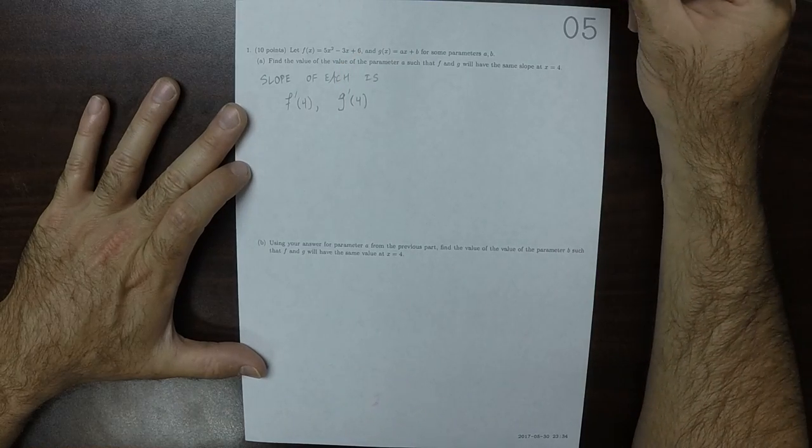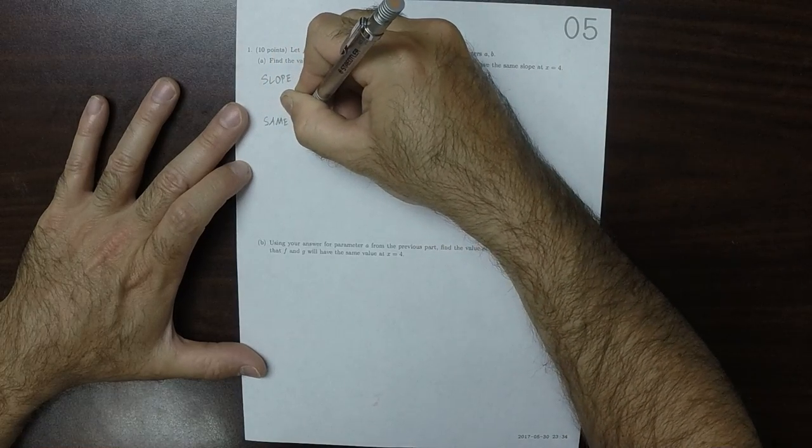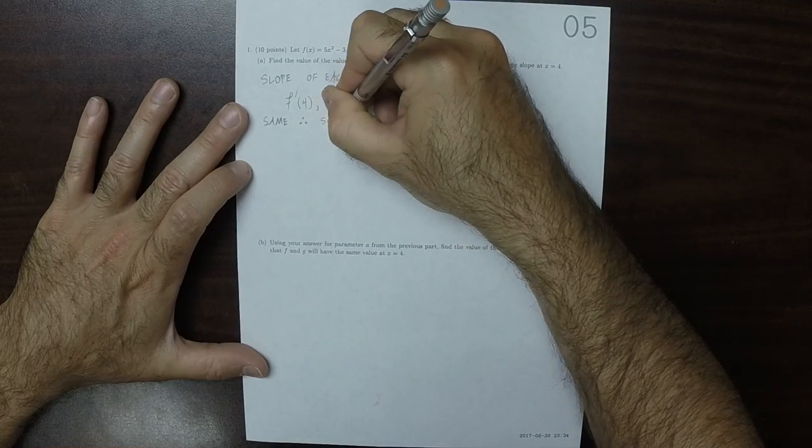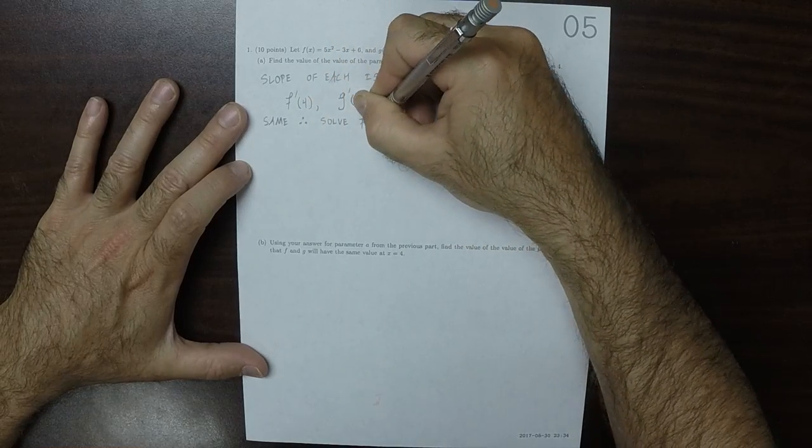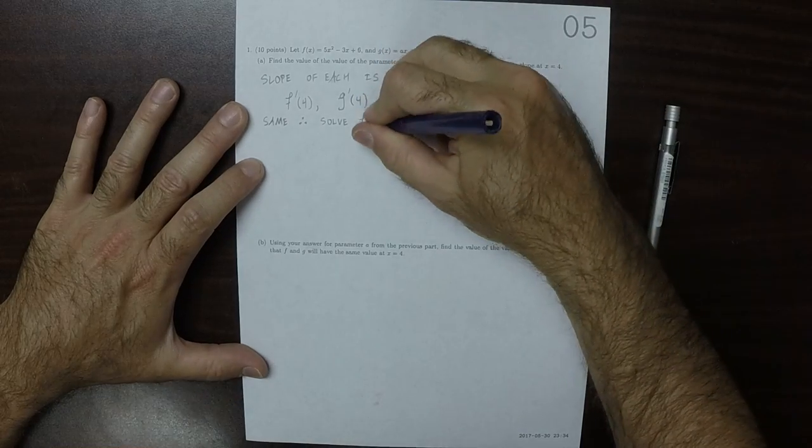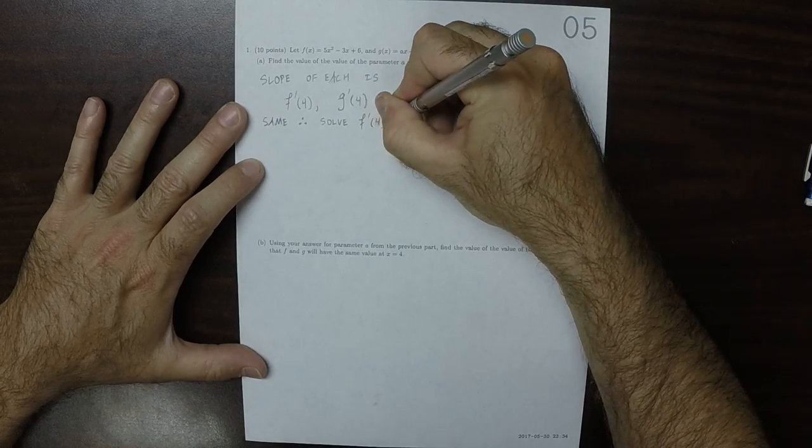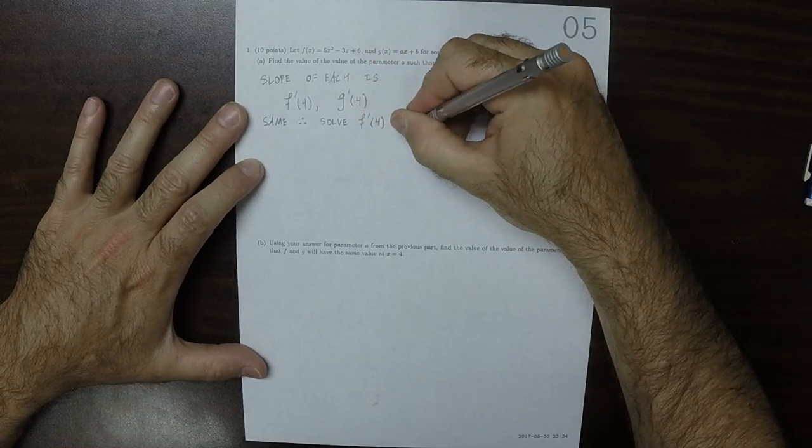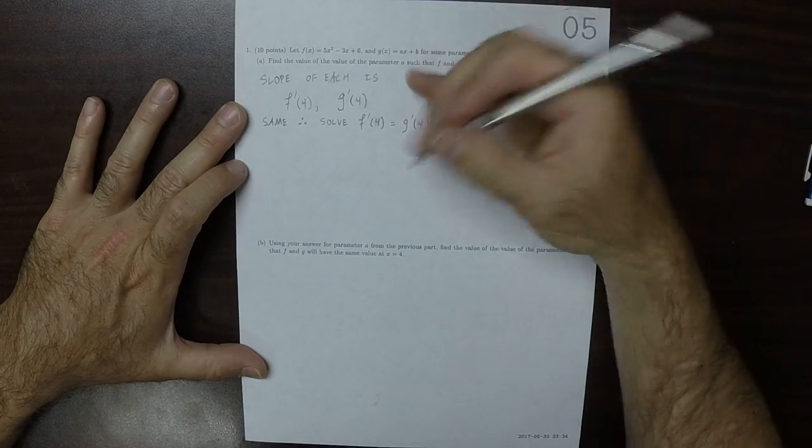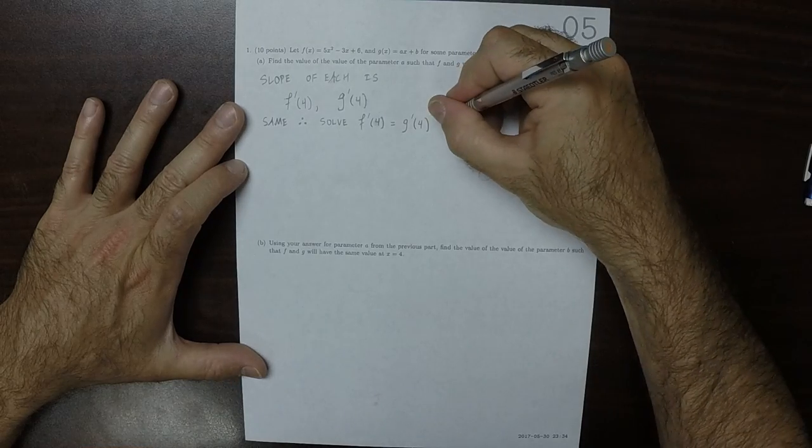And since we want them to be the same, therefore what we're going to do is we're going to solve the derivative of f at 4 equal to the derivative of g at 4. And we're going to solve this for a, for parameter a.